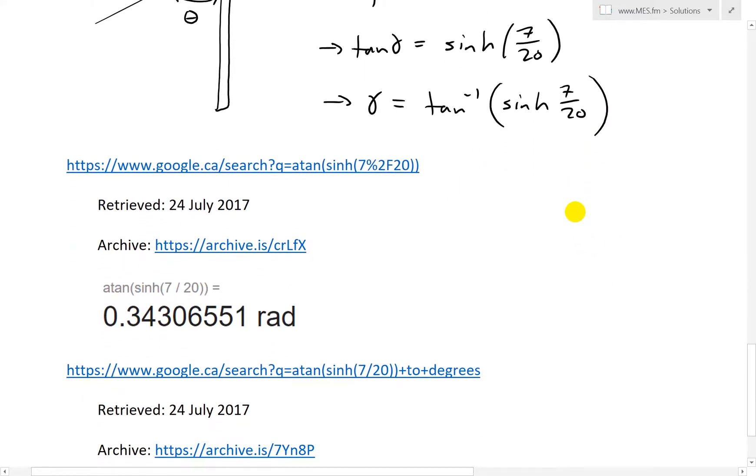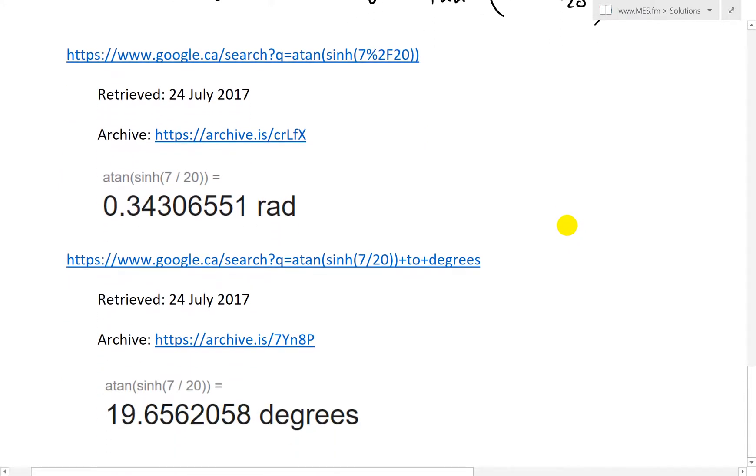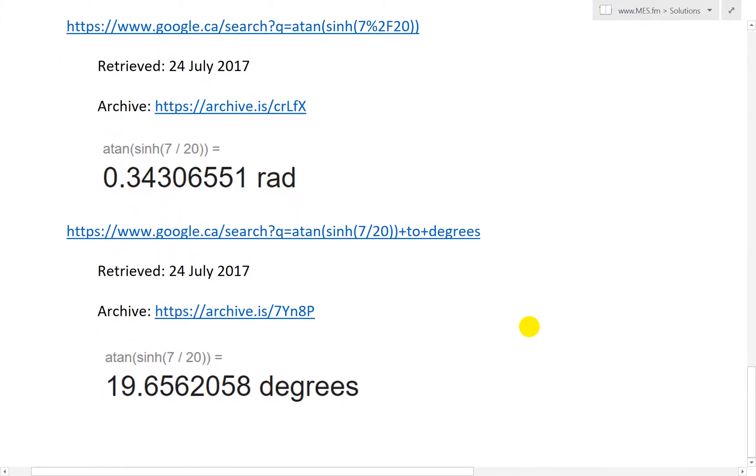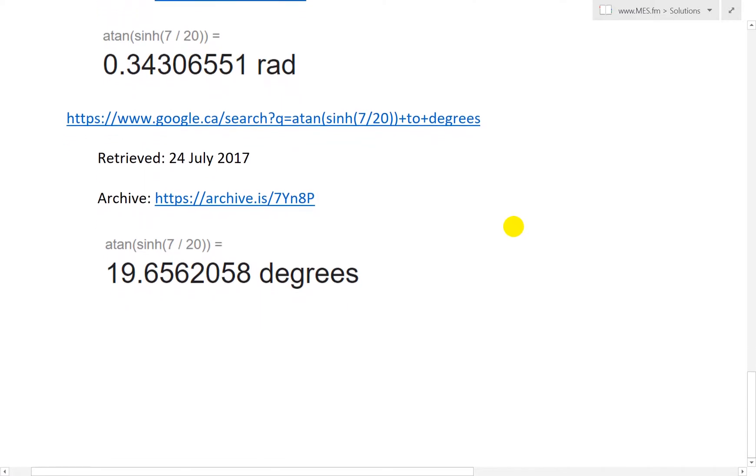All right, so now if you put that in the calculator right here, inverse tan, sinh 7 over 20, we get over here. I've done that, arctan, same thing as writing inverse tan or arctan. And then to write sinh 7 over 20, we get this in radians, 0.34306, et cetera.